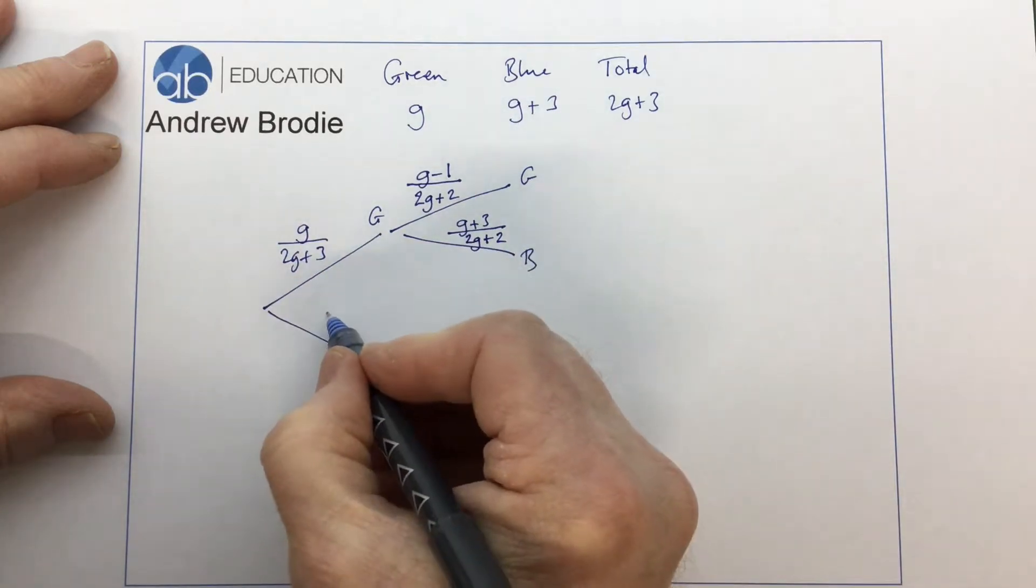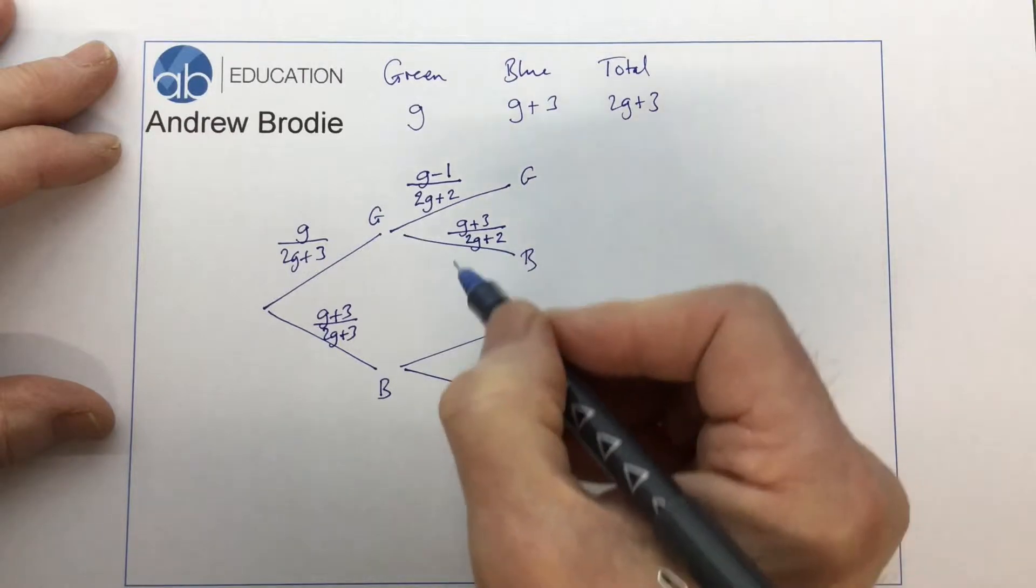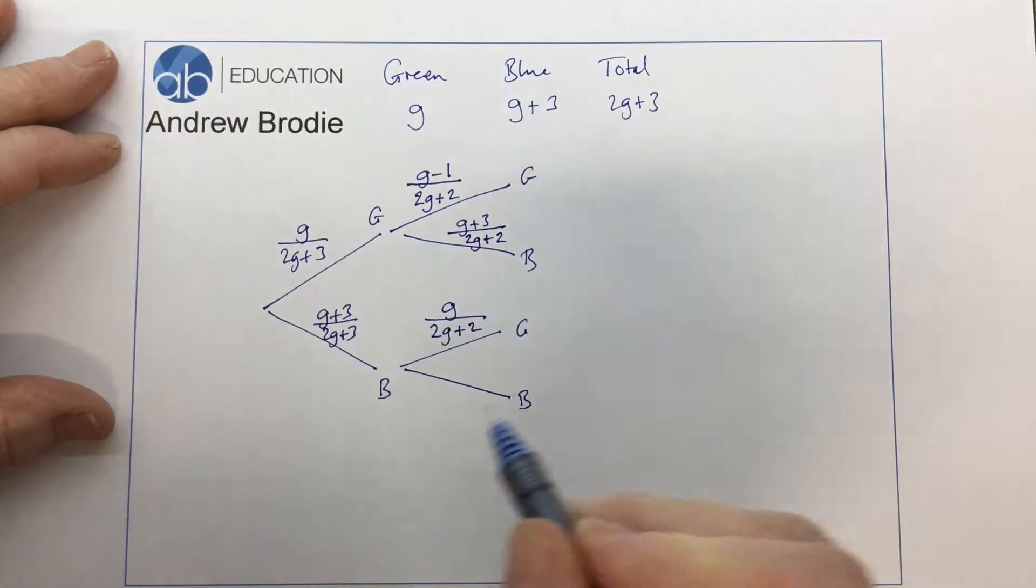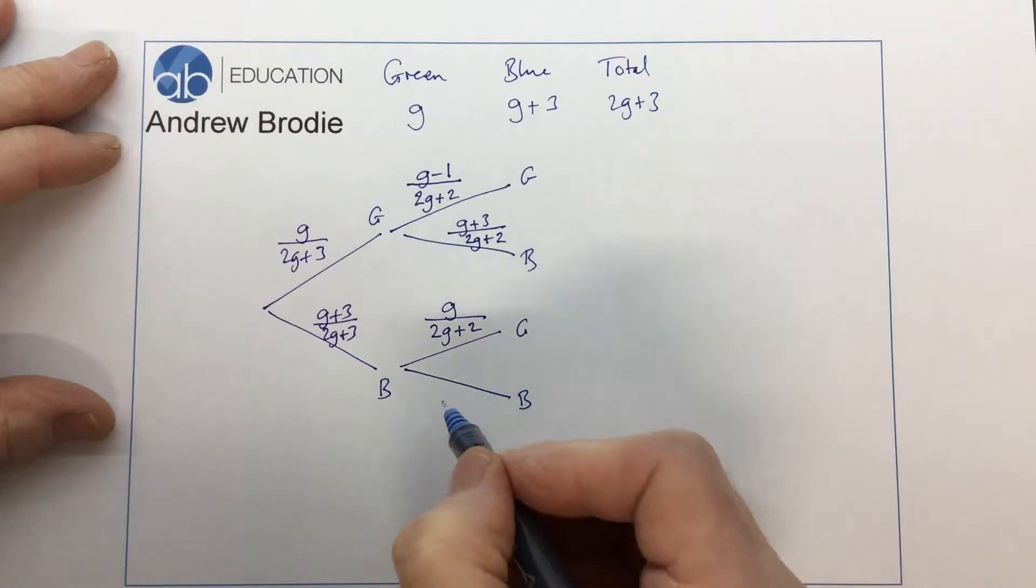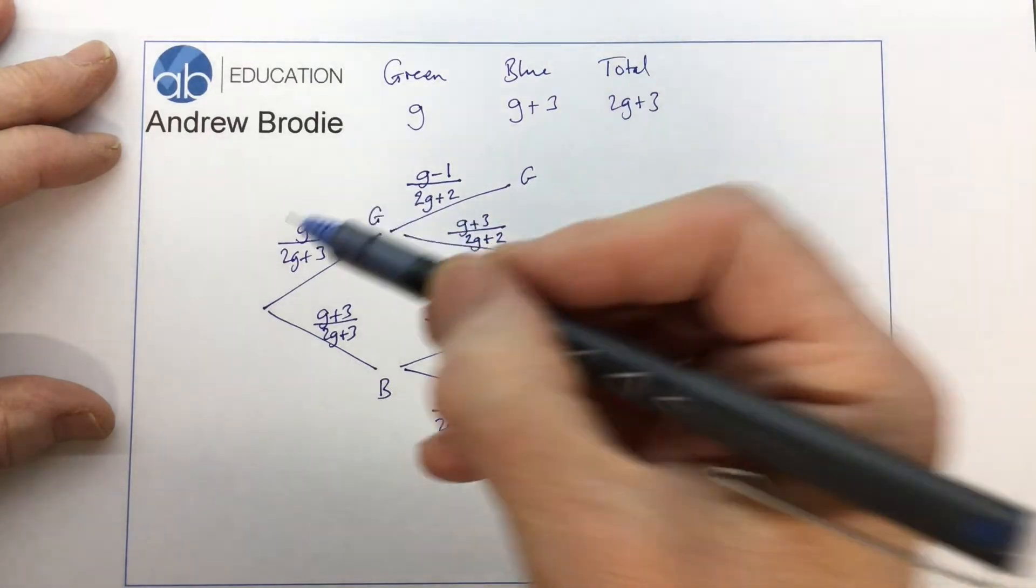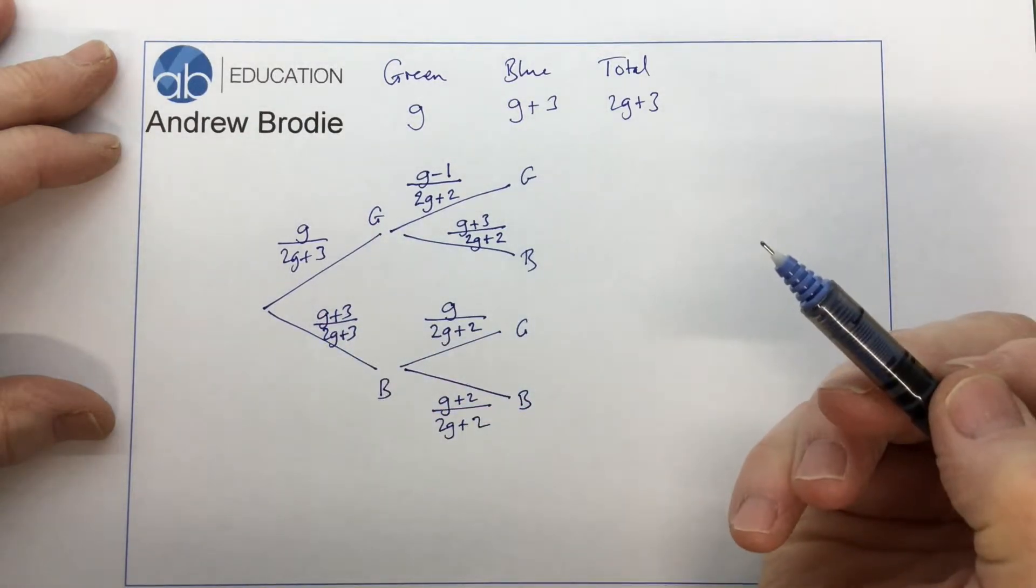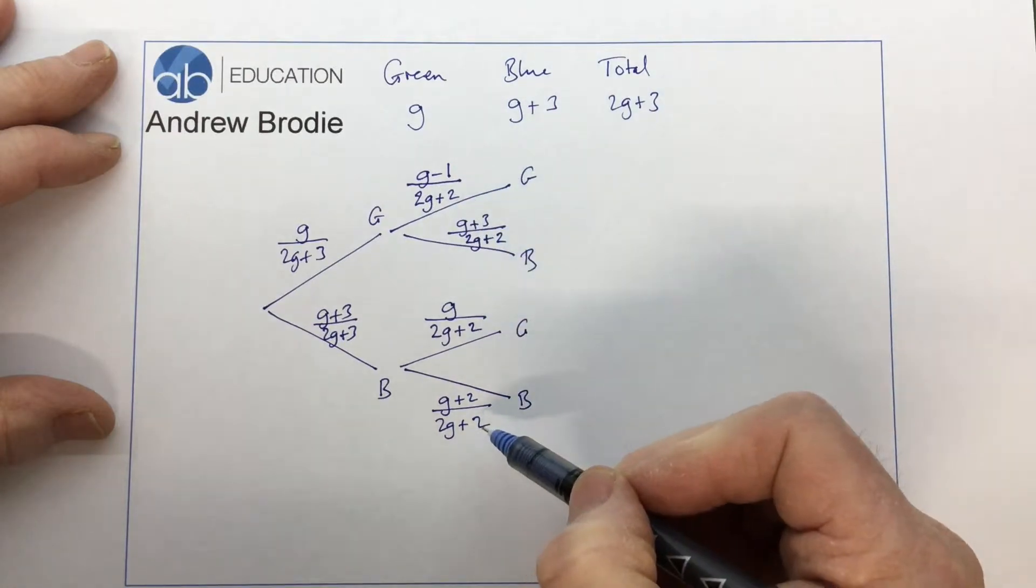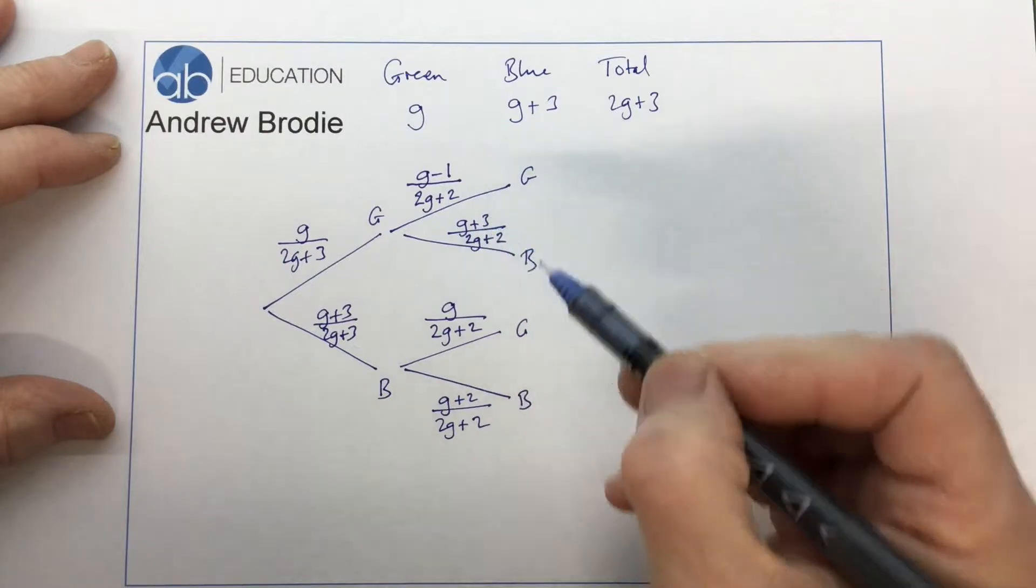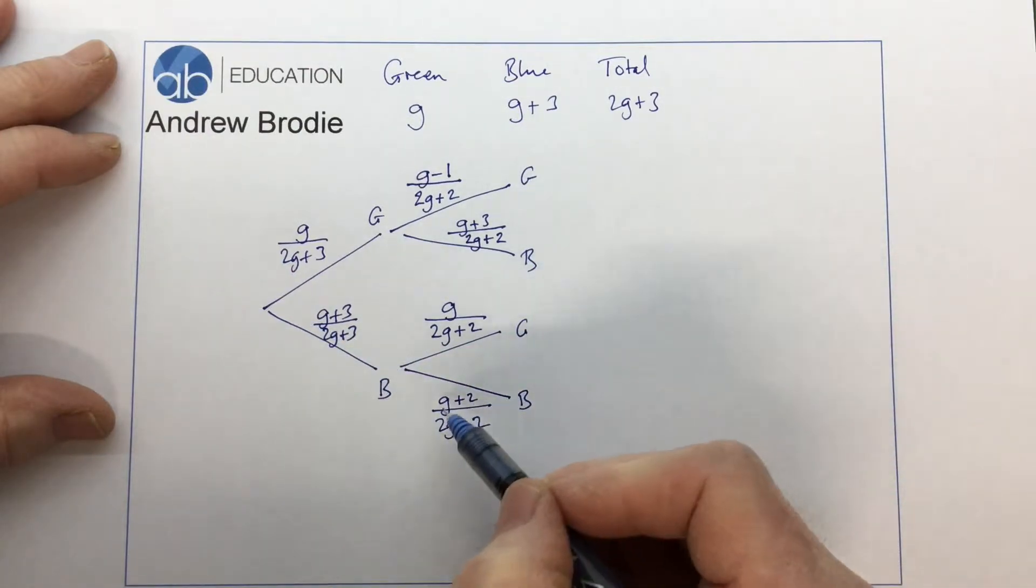Let's go back to the first pick: g plus 3 over 2g plus 3, so the blues out of the total. Now if we pick green this time, we've still got g greens but we have only got 2g plus 2 pens. If we pick blue this time, we must have only g plus 2 pens out of the total of 2g plus 2. If we pick green first, it's g minus 1. If we pick green first, there's still g plus 3 blues. If we pick blue first, there's still g greens, and if we pick blue first, there's now only g plus 2 blues.